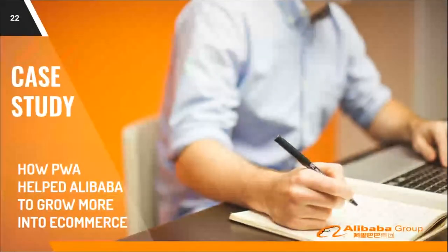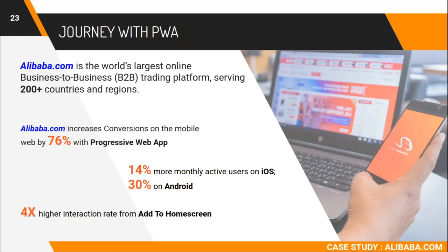Let's focus on the case study of Alibaba, a B2B trading platform used in 200-plus countries. Alibaba increased conversion rates by 76 percent. Conversion rates also increased for iOS and Android users — 14 and 30 percent respectively — but 76 percent is a very large conversion rate increase achieved through PWA, largely attributed to the 'add to home screen' feature.